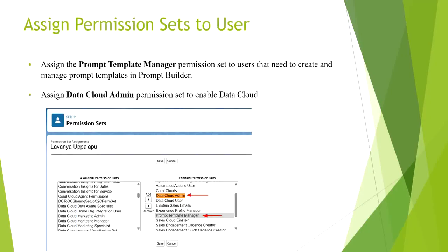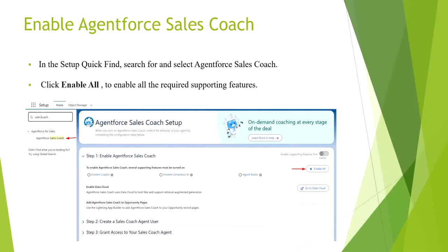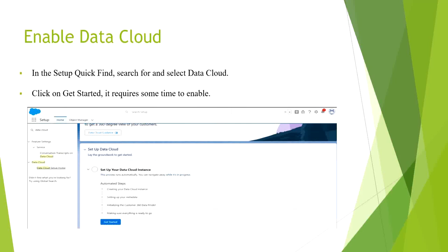First, we have to assign the Prompt Template Manager permission set to the system admin to create and manage prompt templates. Next, we have to assign the Data Cloud Admin permission set to enable Data Cloud. Next, we have to enable Agent for Sales Coach. Here we have to click on 'Enable All' — once we click on Enable All, all the supporting features will be enabled.